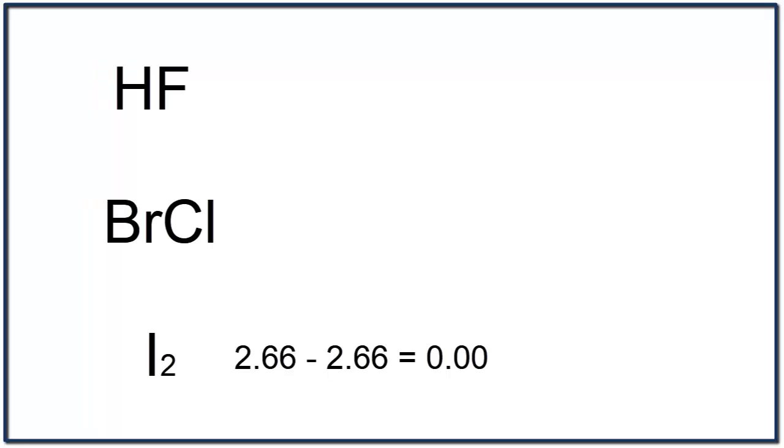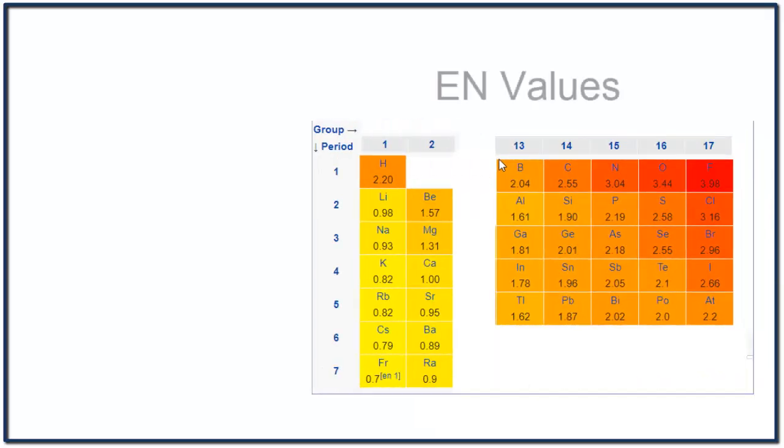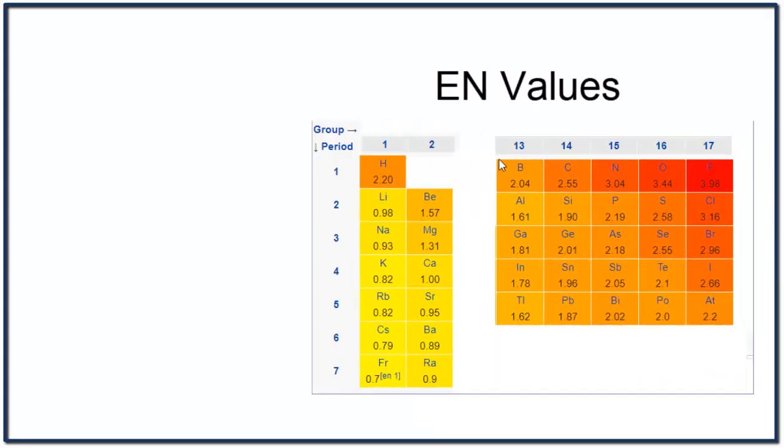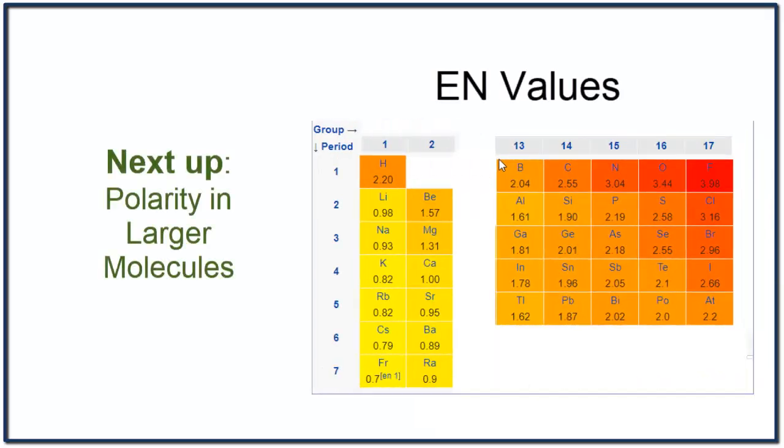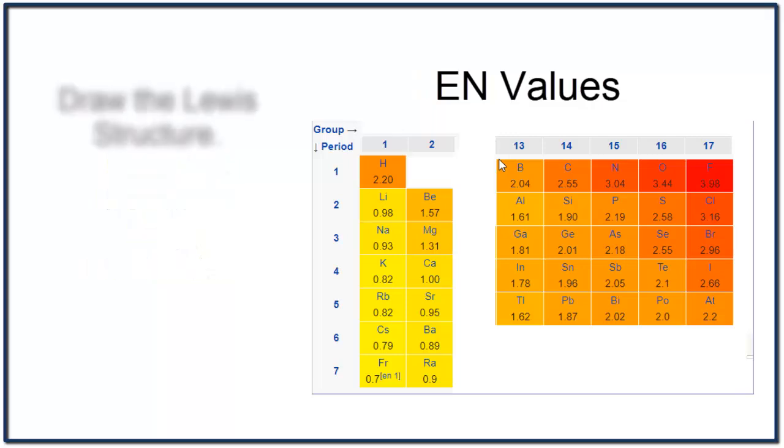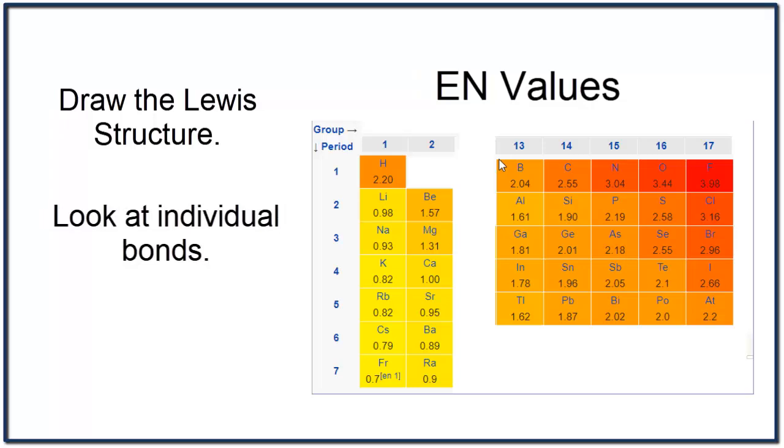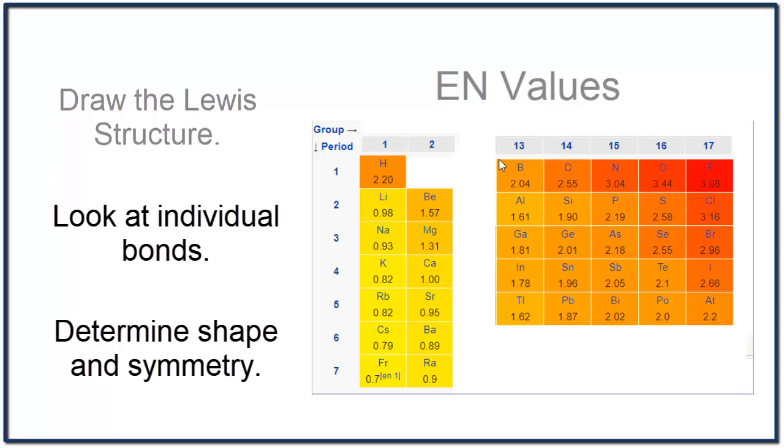We can now find the bond polarity between two atoms and even do simple atoms like HCl or N2. Next up, we want to look at polarity in larger molecules. It's useful to follow these steps. First, have the Lewis structure. Second, we'll look at the individual bonds, just like we've been doing in this video. And finally, we'll look at the shape and the symmetry to figure out if the molecule is polar or nonpolar overall.